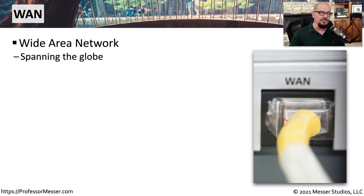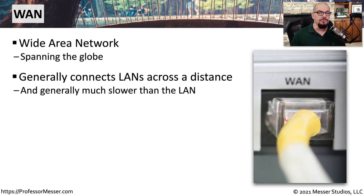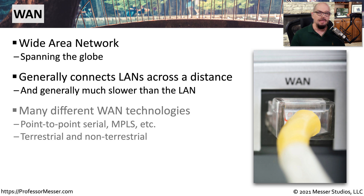If you're going outside the scope of a metropolitan area network and communicating over a much larger distance, then you're probably using a wide area network, or a WAN. One characteristic of these larger networks is that they tend to become a little slower in throughput — wide area networks generally don't run at the same speeds as a local area network. If you're connecting over an MPLS network or point-to-point serial WAN connection, you're almost certainly communicating over a wide area network.